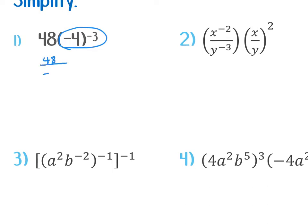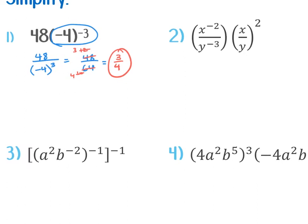It's going to become 48 over negative four to the third. And then the negative is inside the parentheses, so this is negative four times negative four times negative four, which is 64. And then we can reduce this. If you wanted to start with four, this would be 12 and this would be 16. And then four goes into that again — this would be three and this would be four.